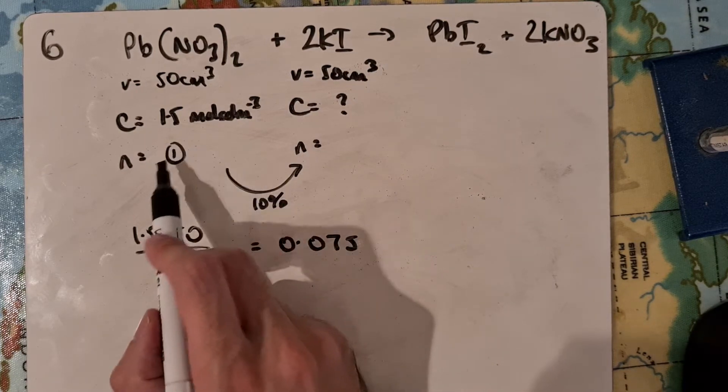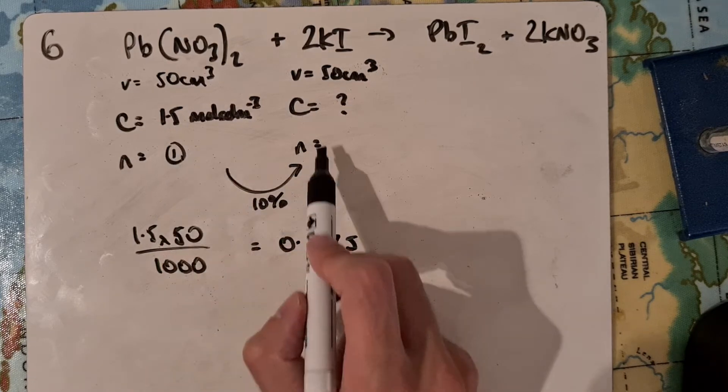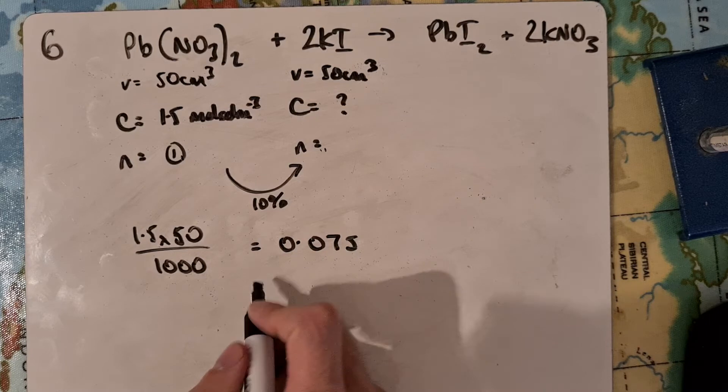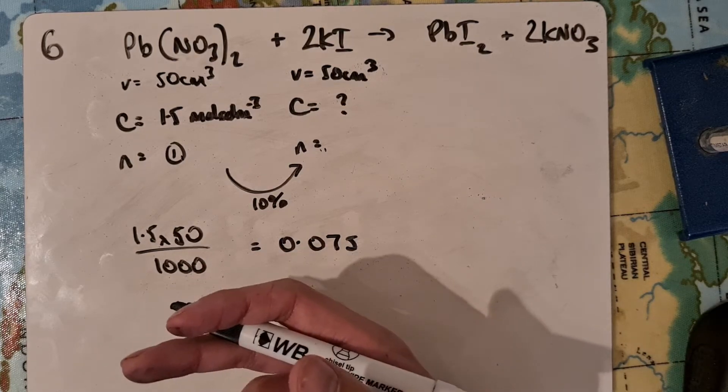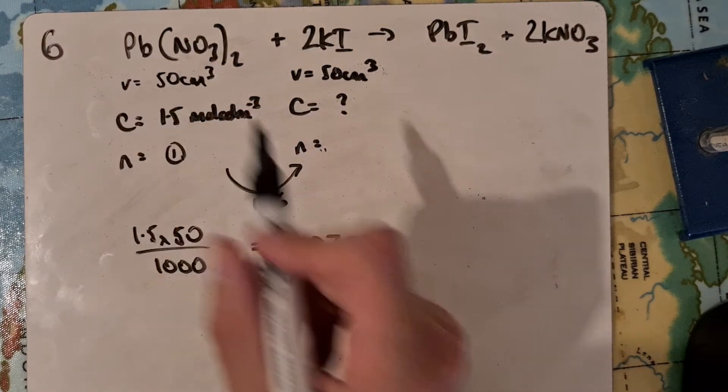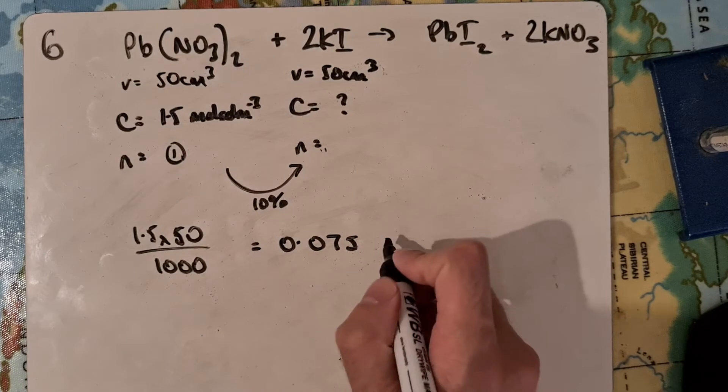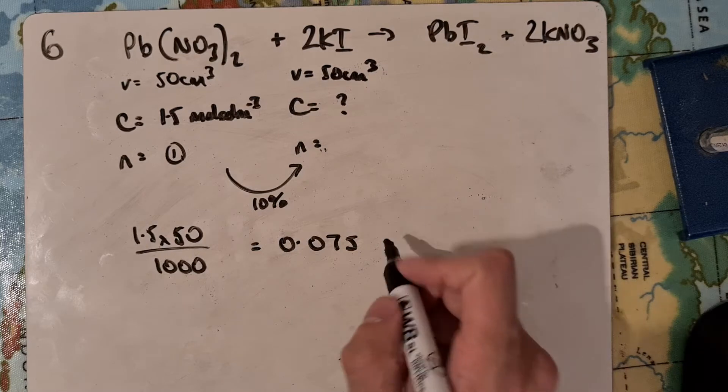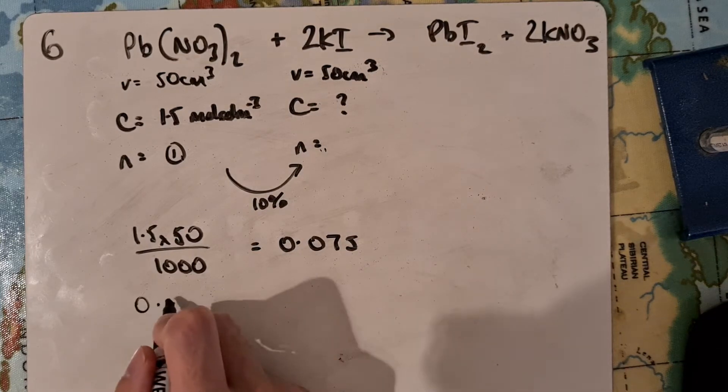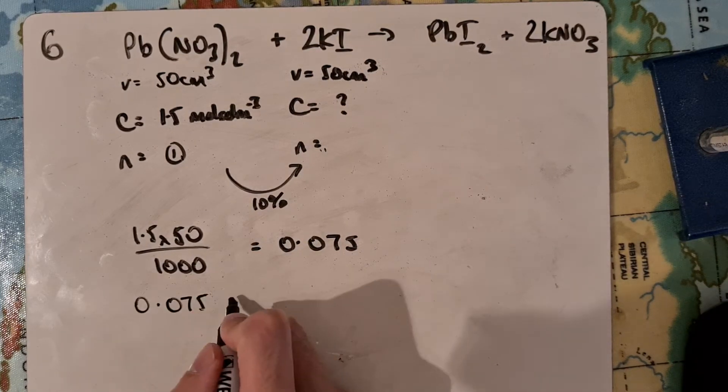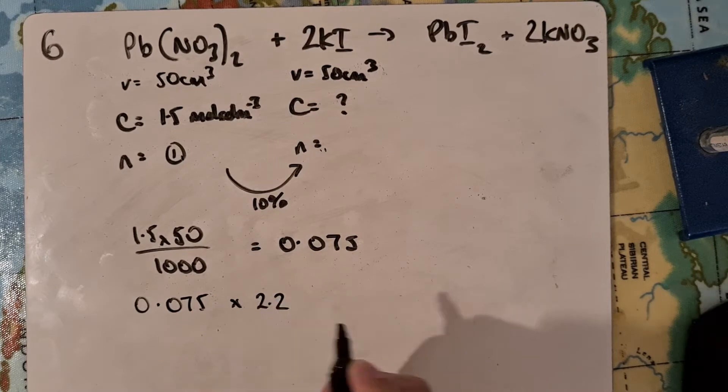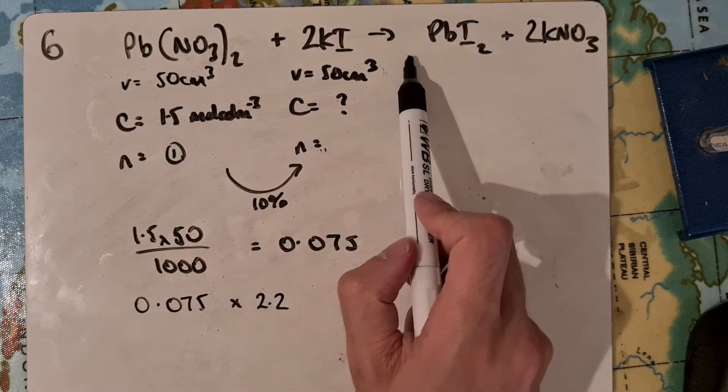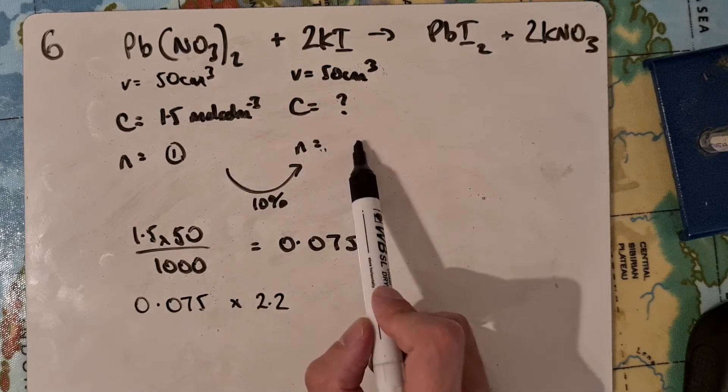Then, first of all, for every 1 mole we have here we'd have 2 over on this side, but we need 10% more than what we require. So if we doubled it to begin with, we then needed 10% more than that. We'd actually have to times this 0.075 by 2.2 to get our 10%. Normally if it's just a 1 to 2, we'd just double it to work out the number of moles here.